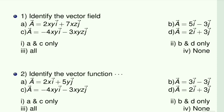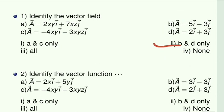Let us assume x, y, z is equal to 1. So what does A become? y is 1, so it is 2i, and x and z are both 1, so it becomes 7j — that is 2i plus 7j, then it will become a point. So field is concerned with a particular point, whereas a vector function is a function of some variable. Here the answer is both B and D, so option 2 is correct.